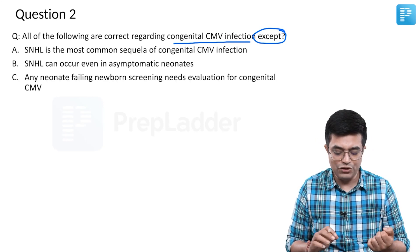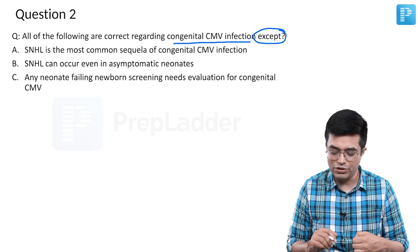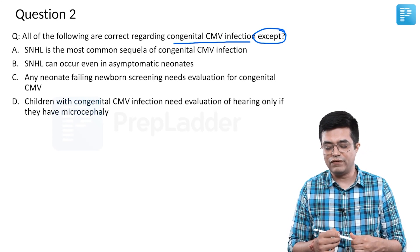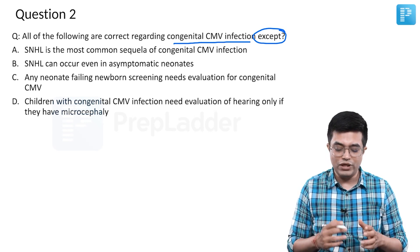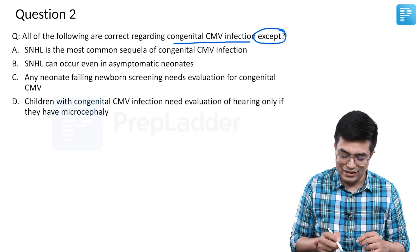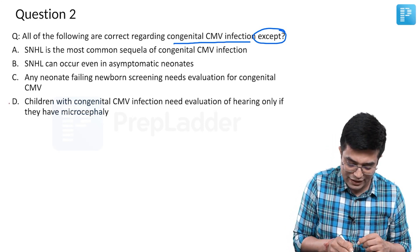Option C is any neonate failing newborn screening needs evaluation for congenital CMV. And option D is children with congenital CMV infection need evaluation of hearing only if they have microcephaly. Among these four options, it is the D option which is incorrect and that is your correct answer.